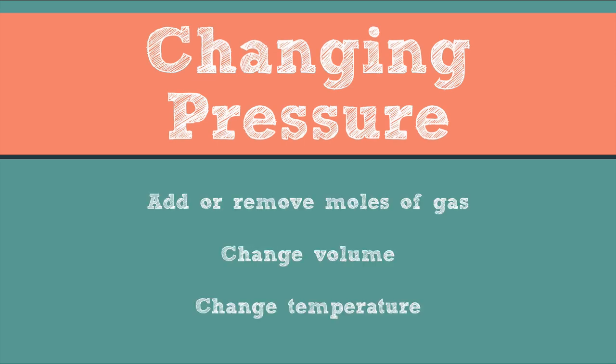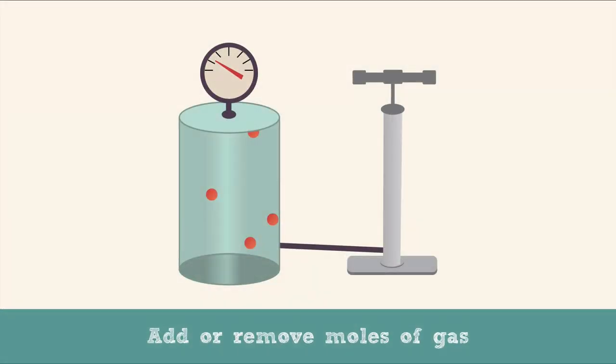So let's see how changing pressure affects the gases. You can change pressure by adding or removing moles of the gas, changing the volume, or changing the temperature. Particles are moving around, hitting surfaces, and creating pressure. When you add more moles of the gas, there are more particles hitting the surfaces, and therefore the pressure will increase.